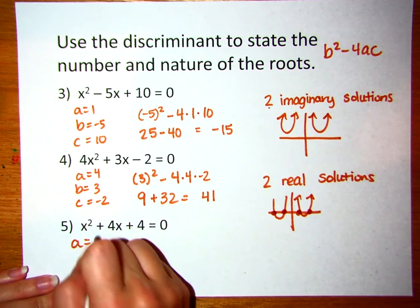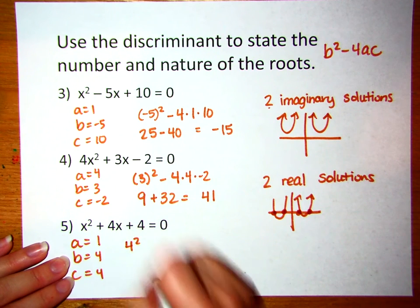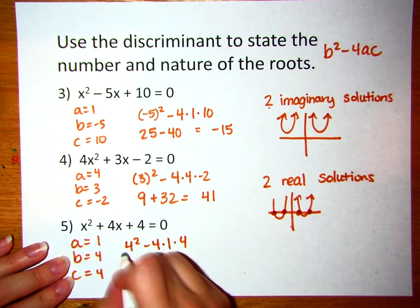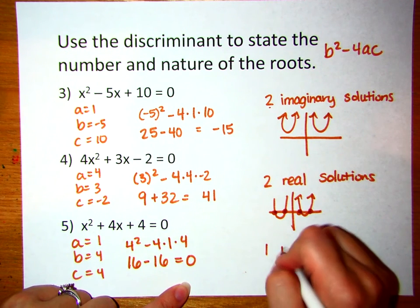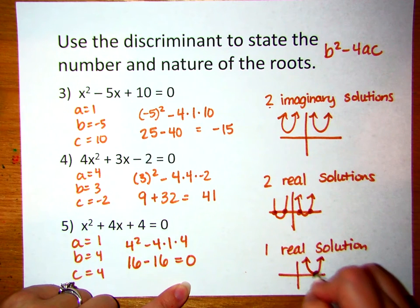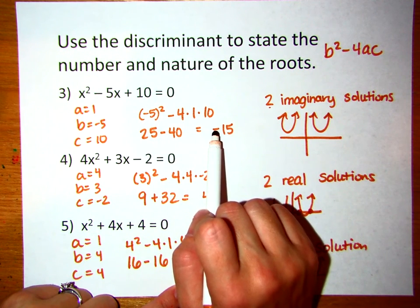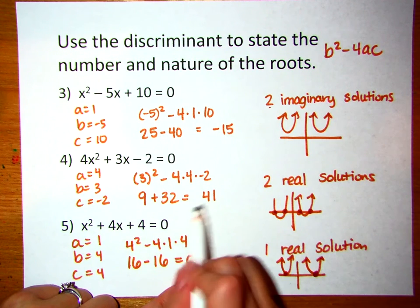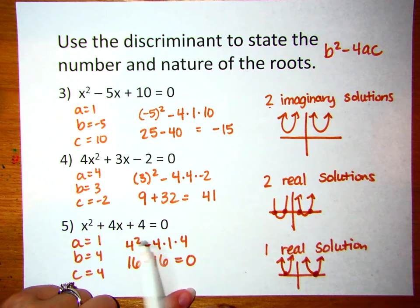For the final example, a is 1, b is 4, and c is 4. We do b squared minus 4ac: that's 16 minus 16, which equals 0. When the discriminant equals 0, there is just one real solution — the parabola's vertex is sitting on the x-axis, crossing at only one place. To review: if the discriminant is negative, the graph is in the air and there are two imaginary solutions. If the discriminant is positive, it crosses the x-axis in two places — two real solutions. And if the discriminant is 0, it crosses at only one place — one real solution.